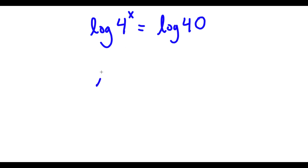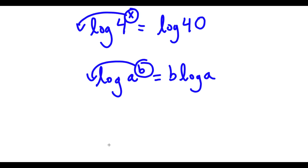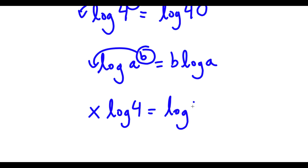Now, if I have something in the form log a to the power of b, I can move this exponent b to the front, so this is going to be times log a. So in this case, I have log 4 to the power of x, so I can move x to the front. So now I have x times log 4 is equal to log 40.